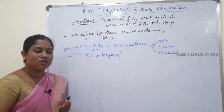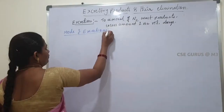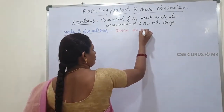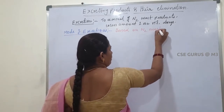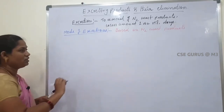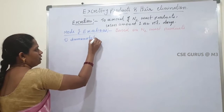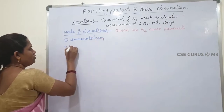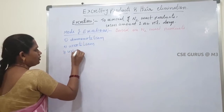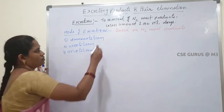Generally, nitrogenous waste products are of three types: ammonia, urea, and uric acid. In all living organisms, these three types of nitrogenous waste products are produced. Based on the nitrogenous waste product excreted, excretion can be divided into three types: first, ammonotelism; second, ureotelism; third, uricotelism.